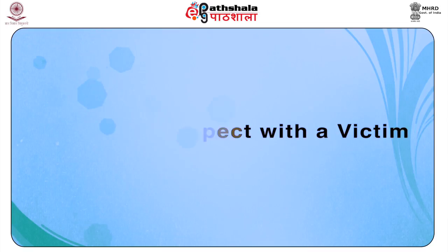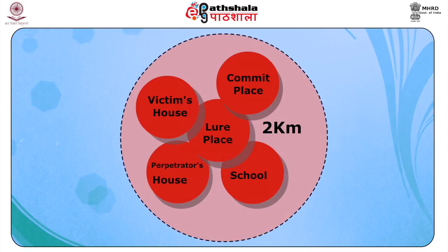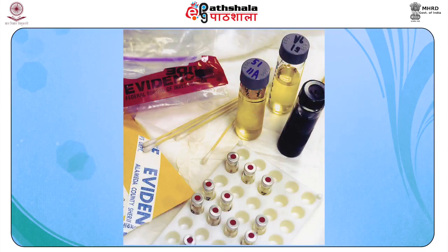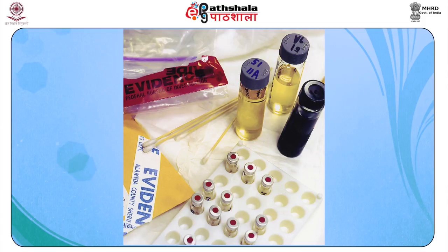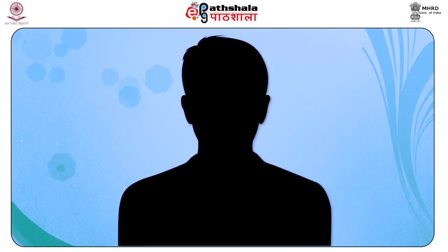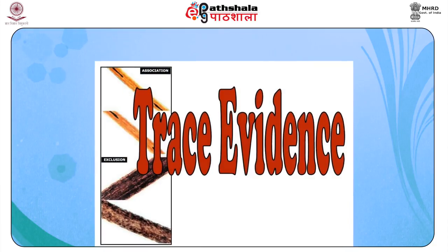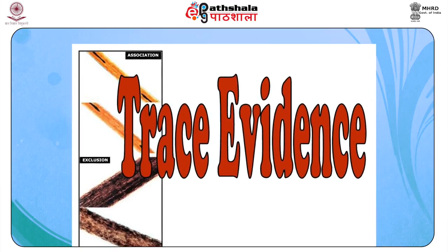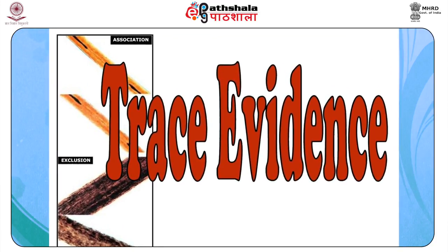Physical evidence can help establish a decisive link between the suspect and the victim, particularly in violent crimes. Evidence such as blood, hair, clothes, fibers, and cosmetics can be transferred from a victim to a perpetrator or vice versa during a crime. A suspect can be found in possession of items linked to the victim, such as matching bullets or blood found on a knife. Trace evidence can also be transferred from a perpetrator to a victim or vice versa, and clothing of both should be thoroughly searched.